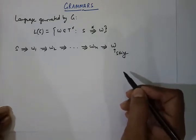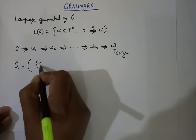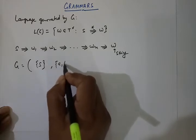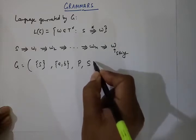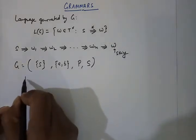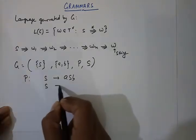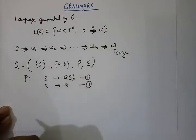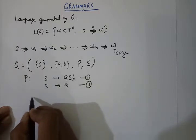We take an example to see what this means. Suppose G = ({S}, {a, b}, P, S) where the variable is capital S, terminal symbols are a and b, P is our production rule set, and S is the start symbol. The production rules are: (1) S → aSB and (2) S → a.